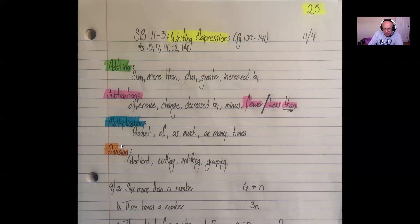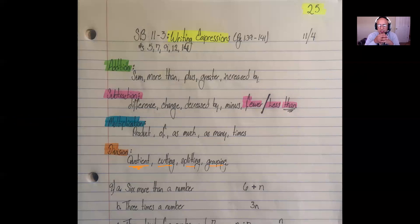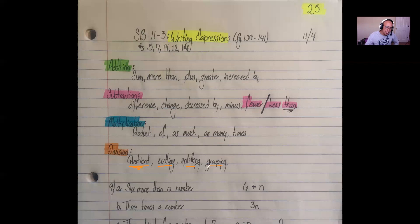Next we have division. The word quotient always means division. Really, anytime we're cutting something into equal parts, splitting something into equal parts, grouping something into different groups of the same size, or separating things into equal quantities — all of that means division. Be mindful of that whenever you're reading a passage.